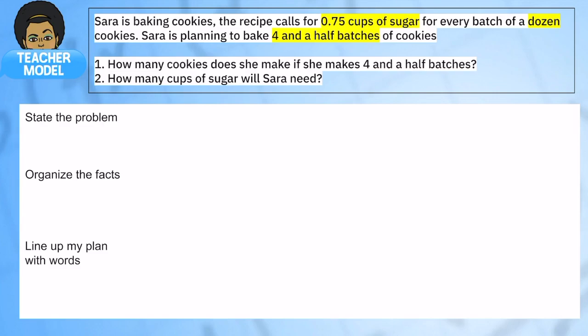So every batch is a dozen. I know a dozen equals 12. Sarah is planning to bake four and a half batches. So four full batches and then a half of a batch. So how many cookies does she make if she makes four and a half batches? And how many cups of sugar will she need?